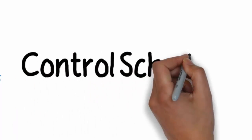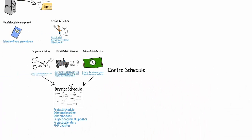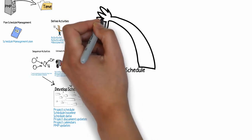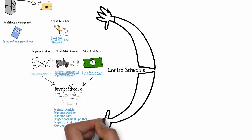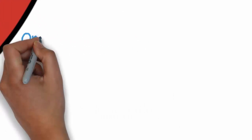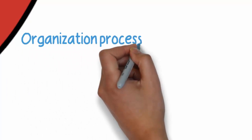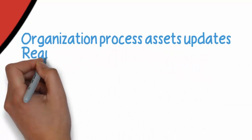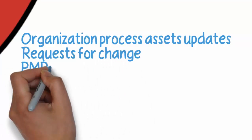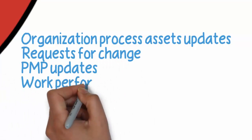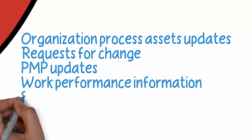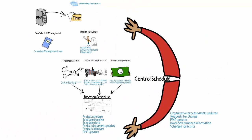The only process within time management that is not a planning activity is Control Schedule, which is essentially trying to keep things under control. Outputs may include organizational process assets updates, requests for changes, updates to our project management plan, other work performance information, and even forecasts. That is a quick look at the project time management knowledge area in the fifth edition of the PMBOK.